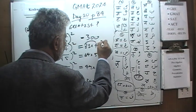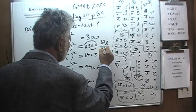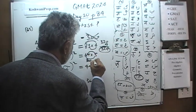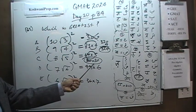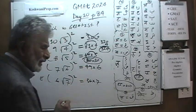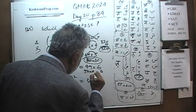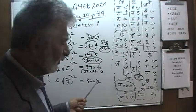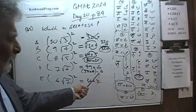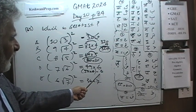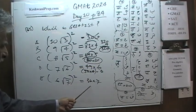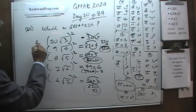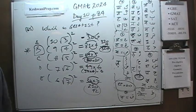Computing: 81×4 — 80×4 is 320, plus 1×4 is 4, so that's 324. That's already bigger than 300. Then 64×5: 60×5 is 300, plus 4×5 is 20, giving 320 — still less than 324. Then 49×6: 50×6 is 300, minus 6 gives 294 — less than 324. And 36×7: 30×7 is 210, plus 6×7 is 42, giving 252 — doesn't even reach 300. The answer is B, because B gave us 324.